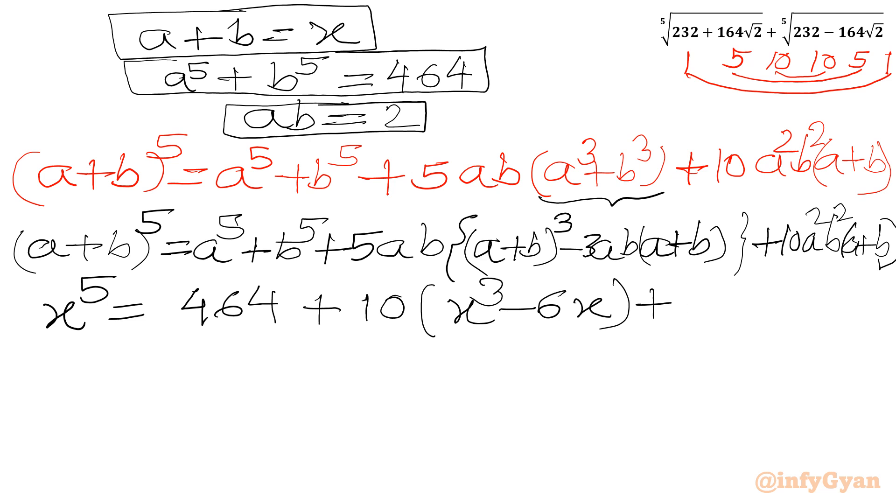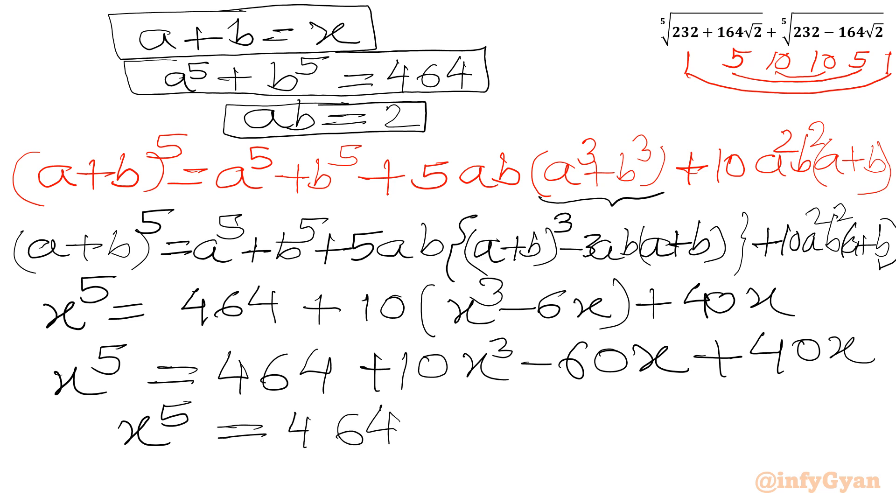I can write X power 5 will be equal to 464 plus 10 X cube minus 60 X plus 40 X. Or we can write X power 5 equal to 464 plus 10 X cube minus 20 X. Now we will take all the terms to LHS. So our equation will become X power 5 minus 10 X cube plus 20 X minus 464 equal to 0.